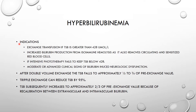We perform exchange transfusion if the total serum bilirubin is greater than 428 micromoles per liter in a neonate, or if there is increased bilirubin production from isoimmune hemolysis. Exchange transfusion helps to remove circulating sensitized red blood cells, so if there is ABO or Rhesus incompatibility, it is a preferred treatment modality. If intensive phototherapy fails to keep TSB below 428, exchange transfusion becomes necessary.